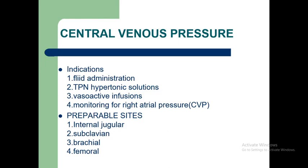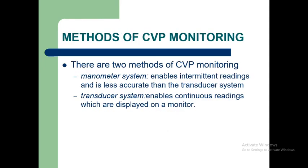Preferred sites are internal jugular, subclavian, brachial, and femoral. There are two methods of CVP monitoring: the manometer system, which enables intermittent readings and is less accurate, and the transducer system, which enables continuous readings displayed on a monitor. The transducer system is the preferred method.